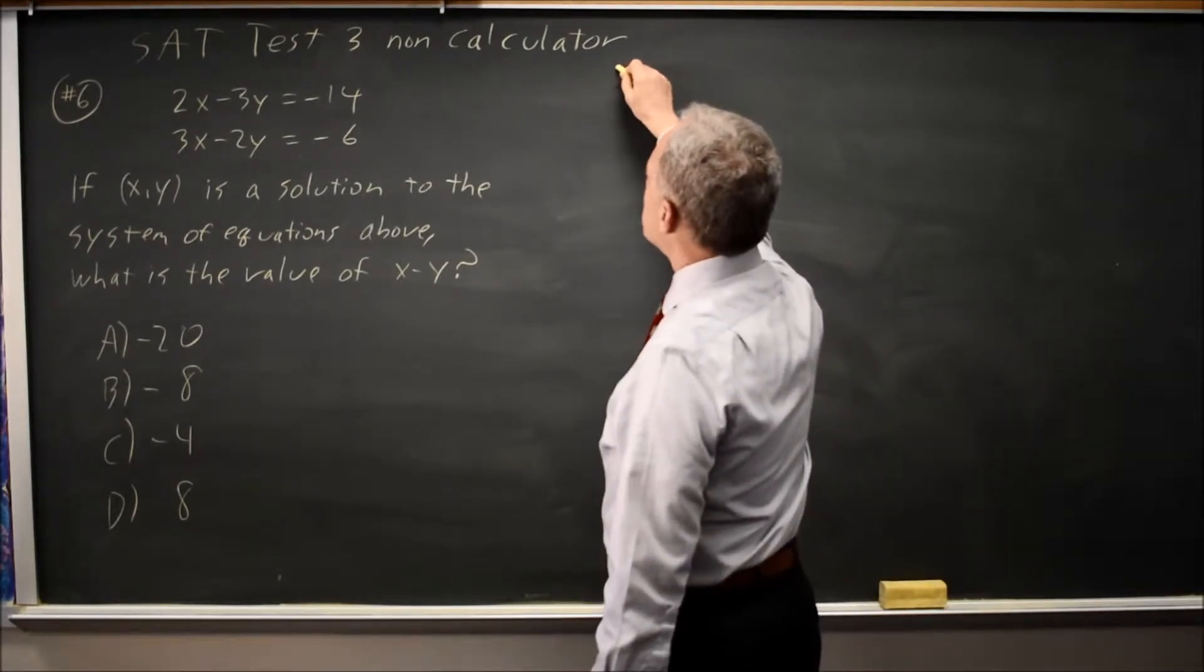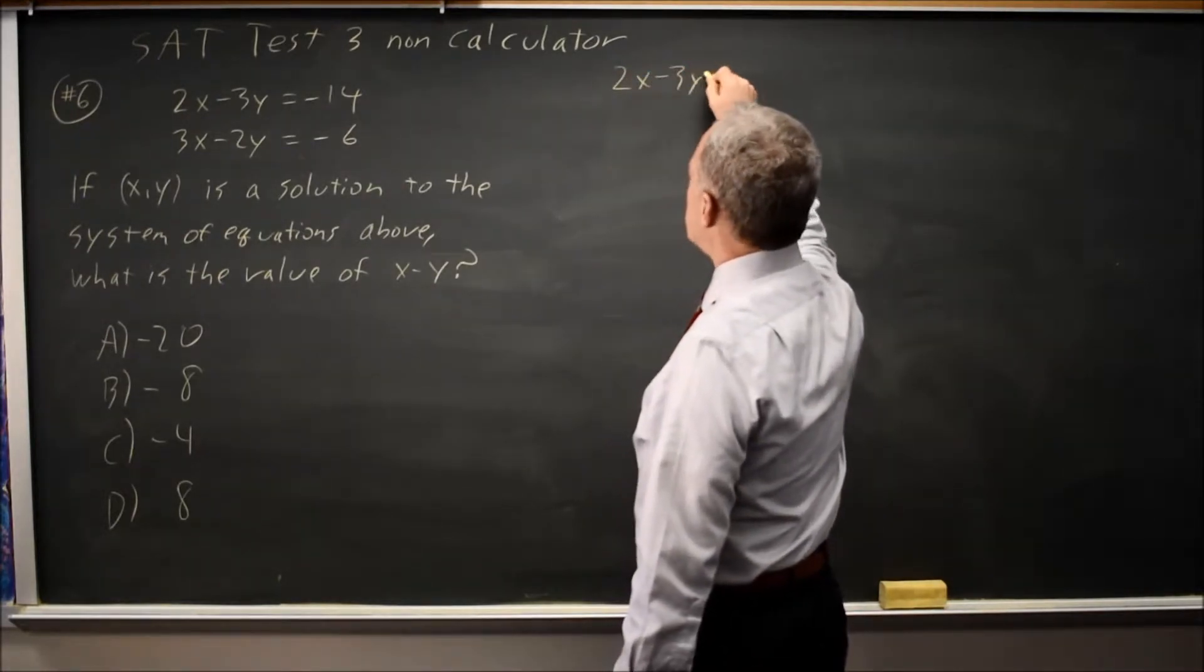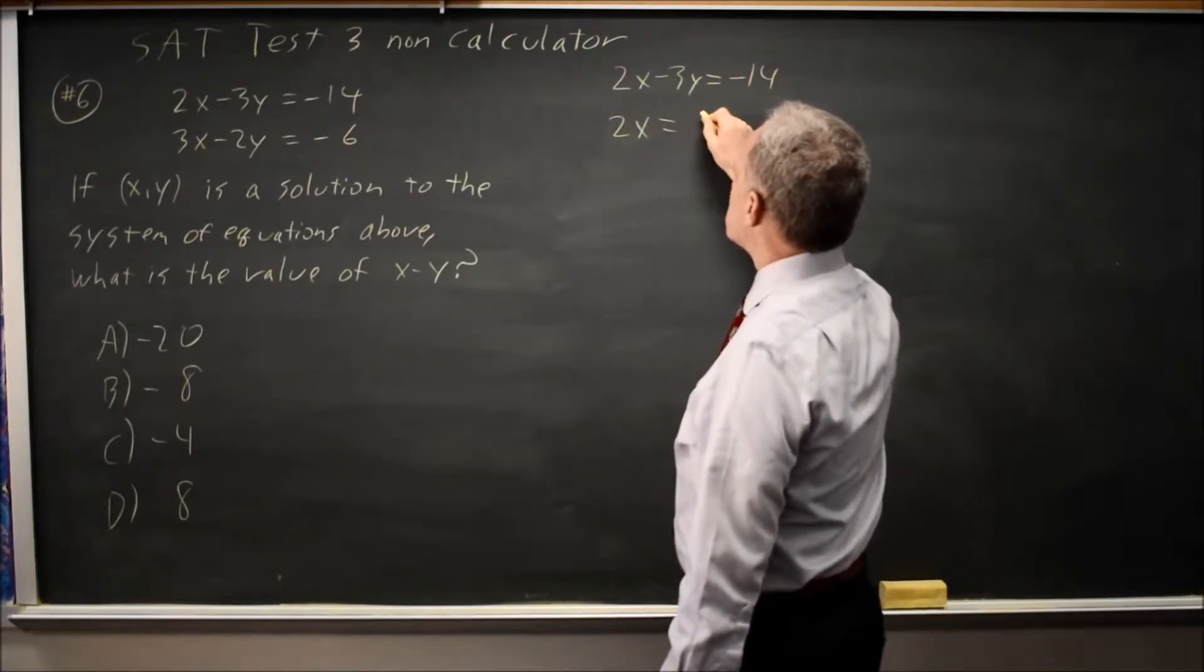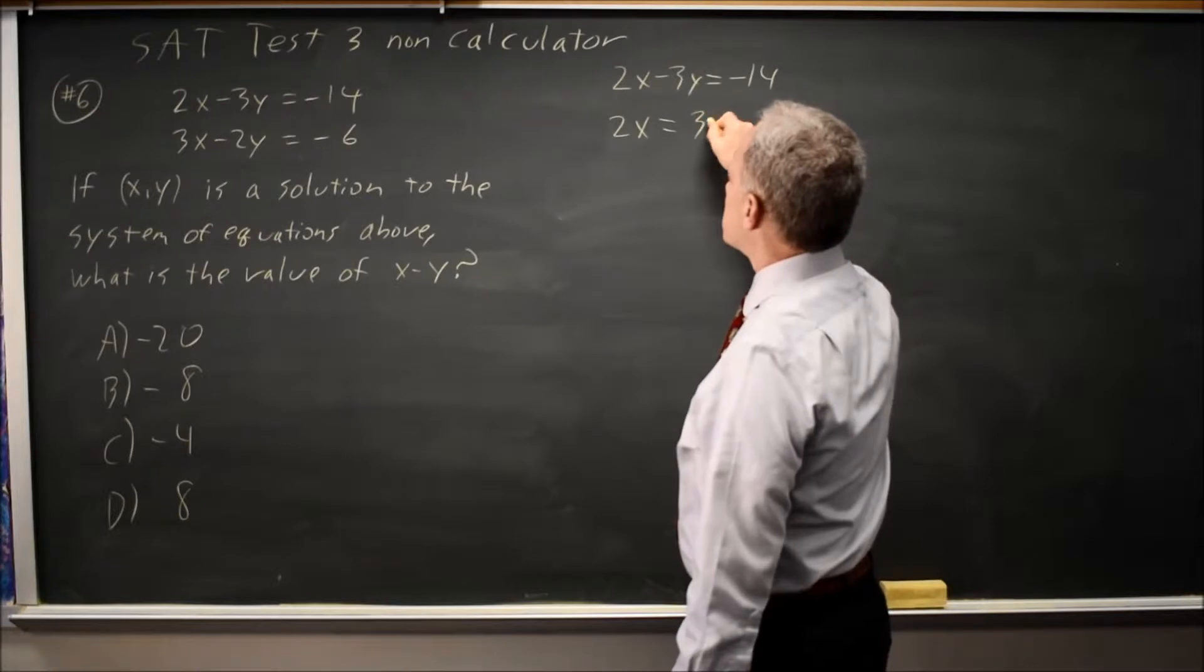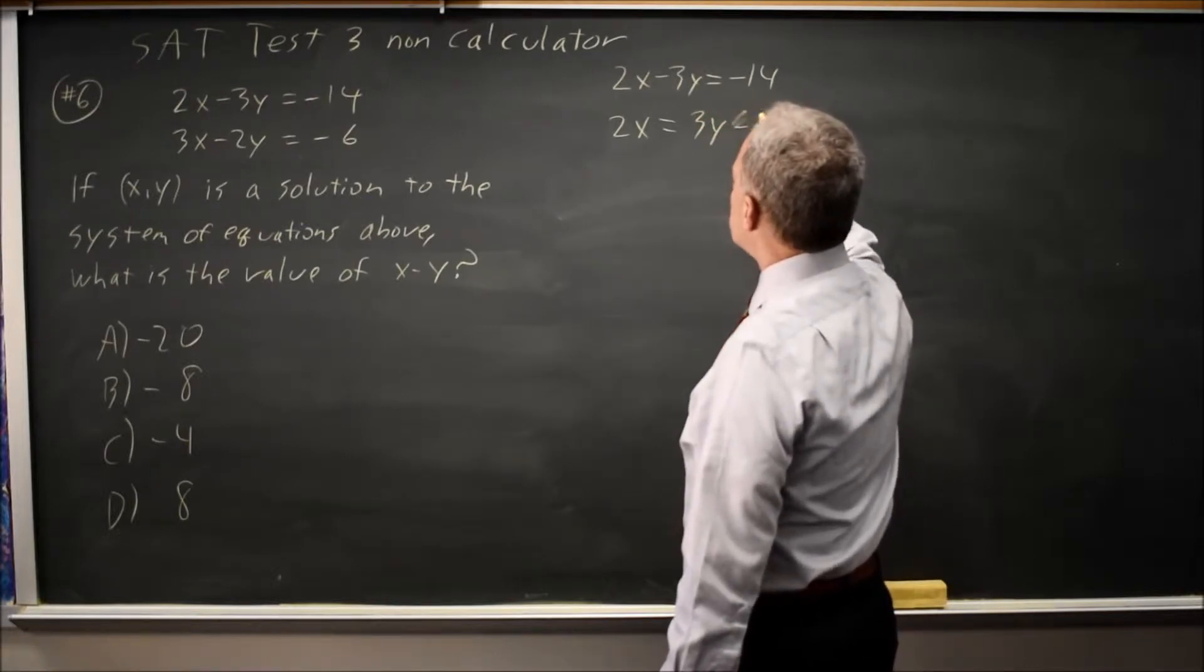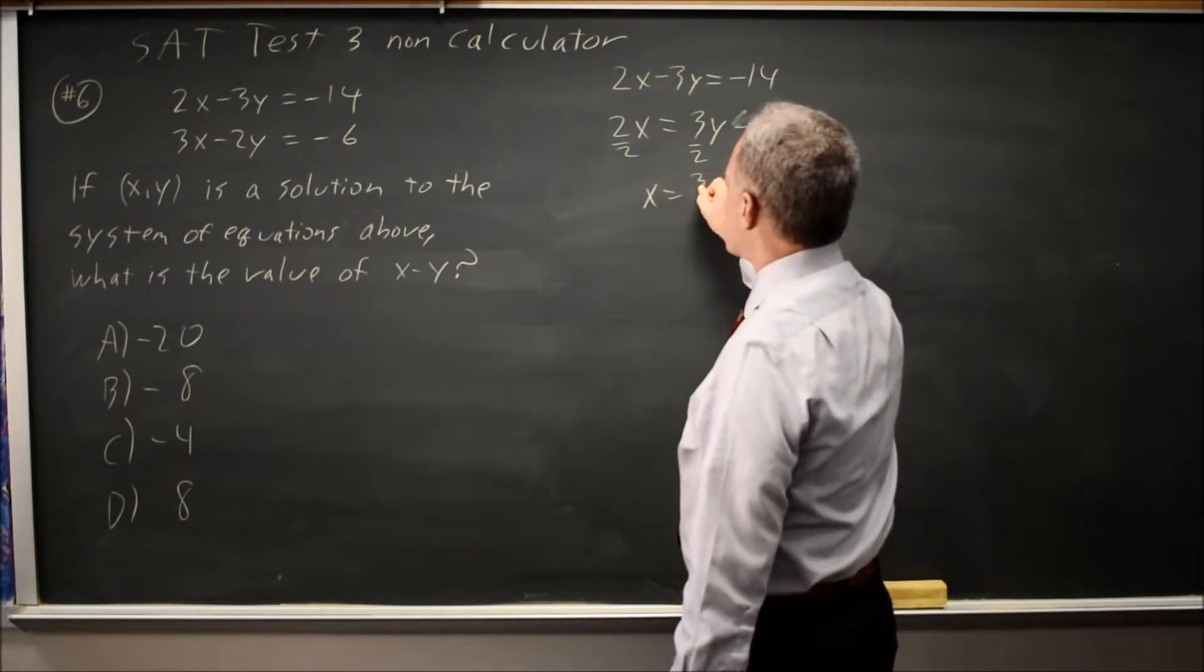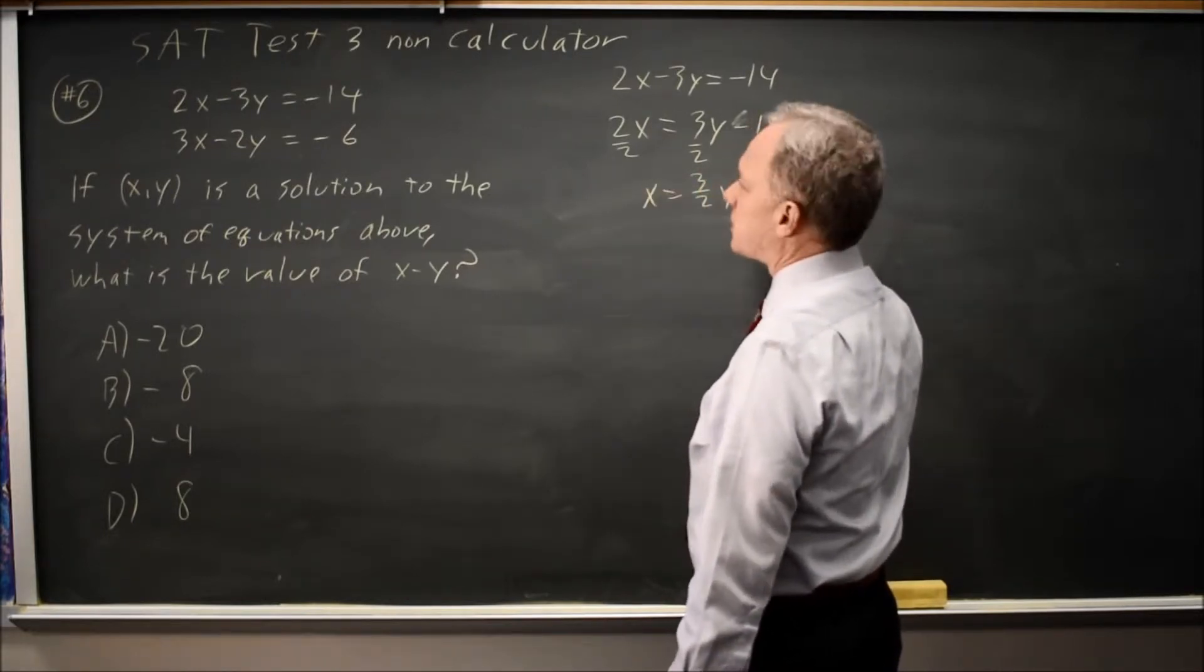And I'll do that. So I have 2x minus 3y equals negative 14. So 2x equals, adding 3y to both sides, 3y minus 14. Divide by 2. x equals 3 halves y minus 7.